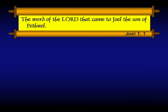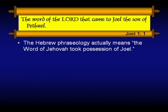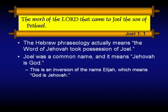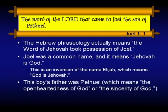'The word of the Lord that came to Joel, the son of Pethuel.' The Hebrew phraseology here actually means 'the word of Jehovah took possession of Joel.' The language there is very strong — it isn't that he's whispering in his ear; the word of Jehovah took possession of Joel is what the Hebrew really says. Joel was a common name. It means 'Jehovah is God.' It's an inversion of Elijah, which means 'God is Jehovah.' It's kind of interesting because they probably knew each other.